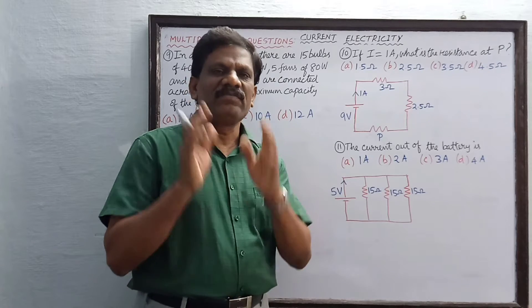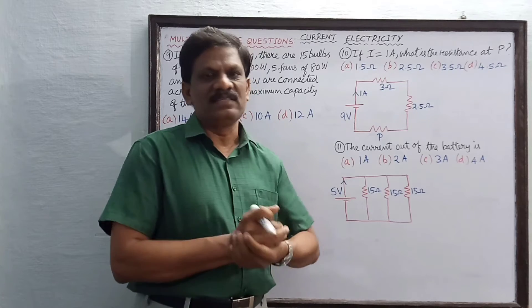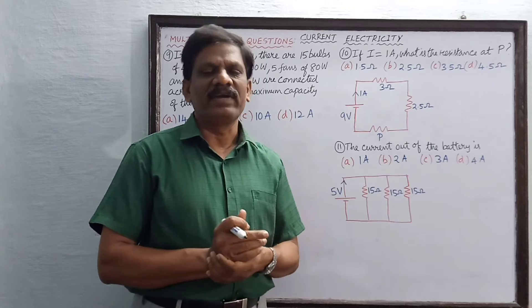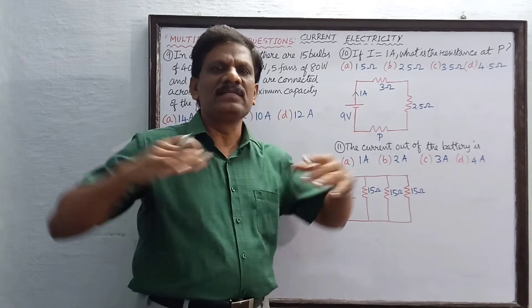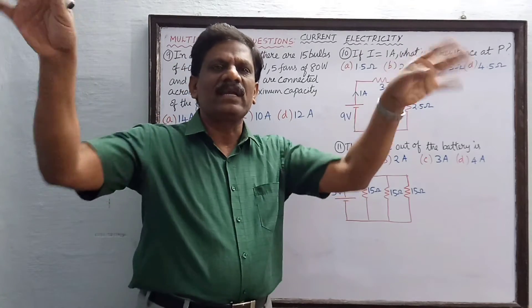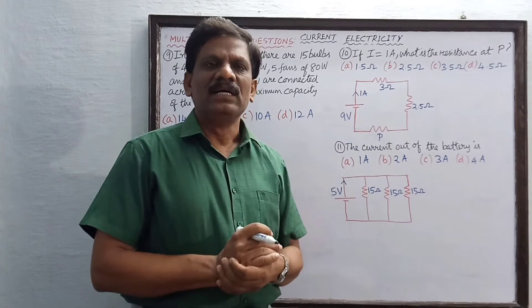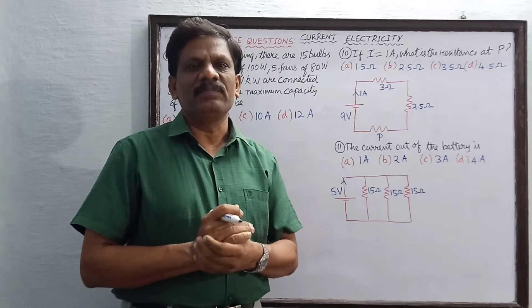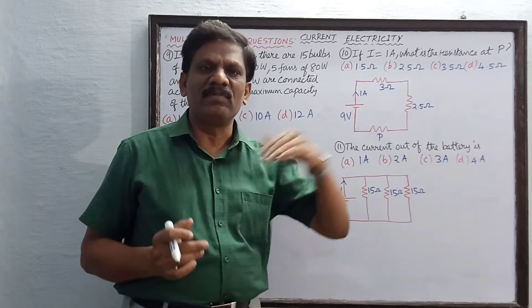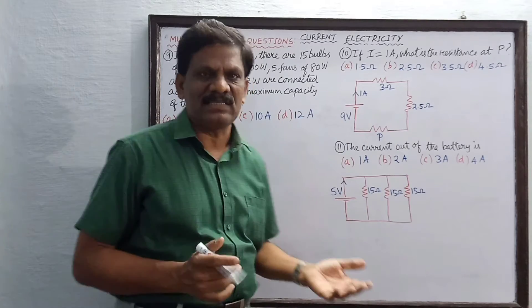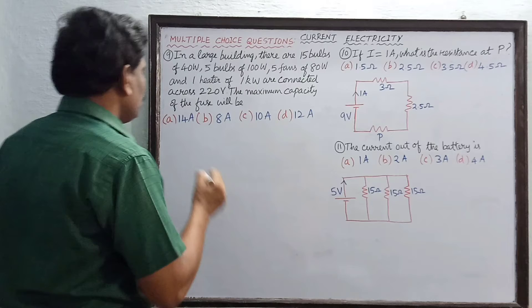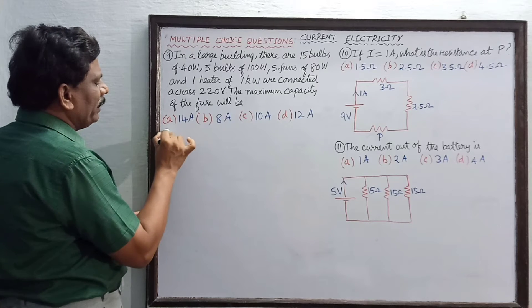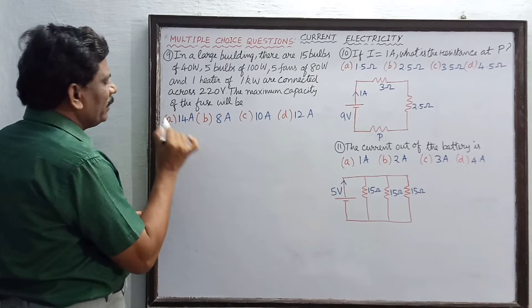The power of each device is given, so we need to find the total power. All these devices are connected in parallel, so we have to add the powers. The power in a parallel combination is equal to the sum of individual powers. So the total power P is equal to...